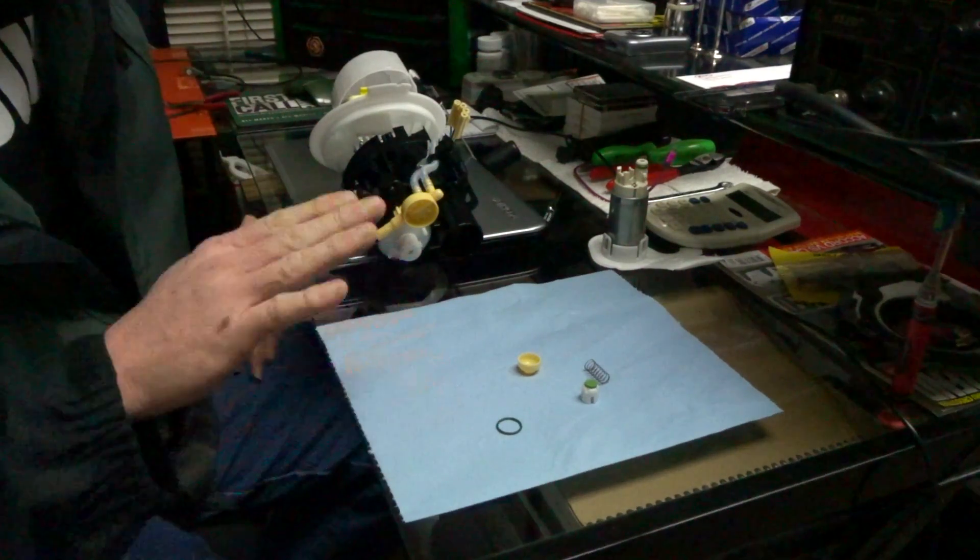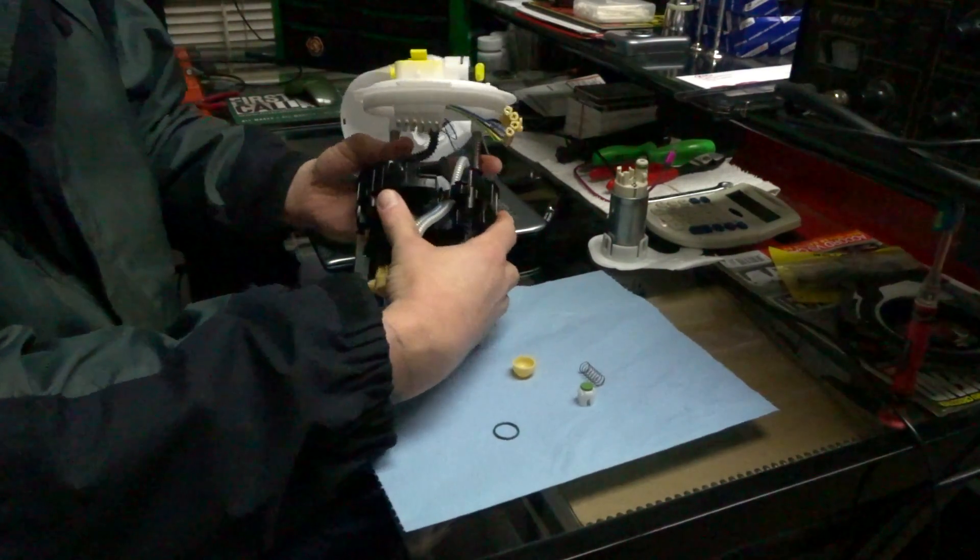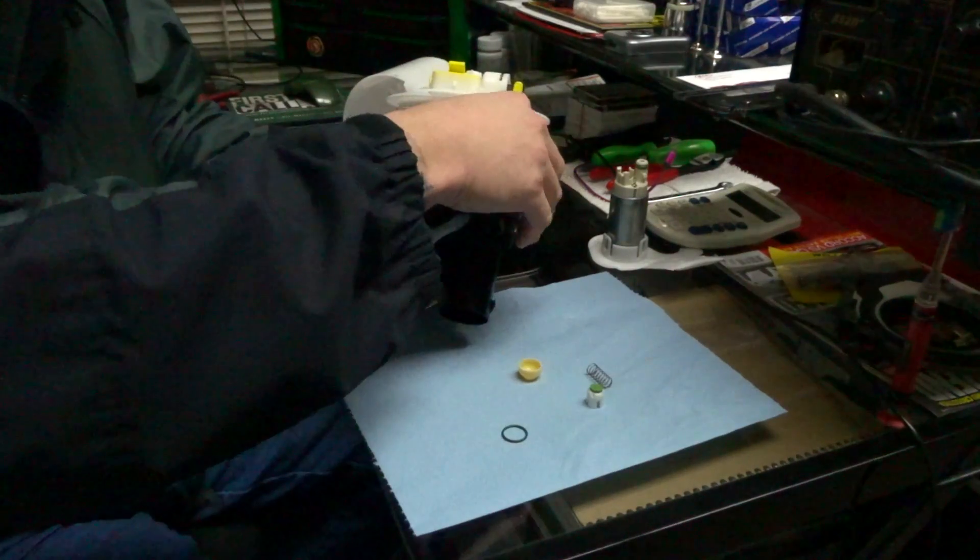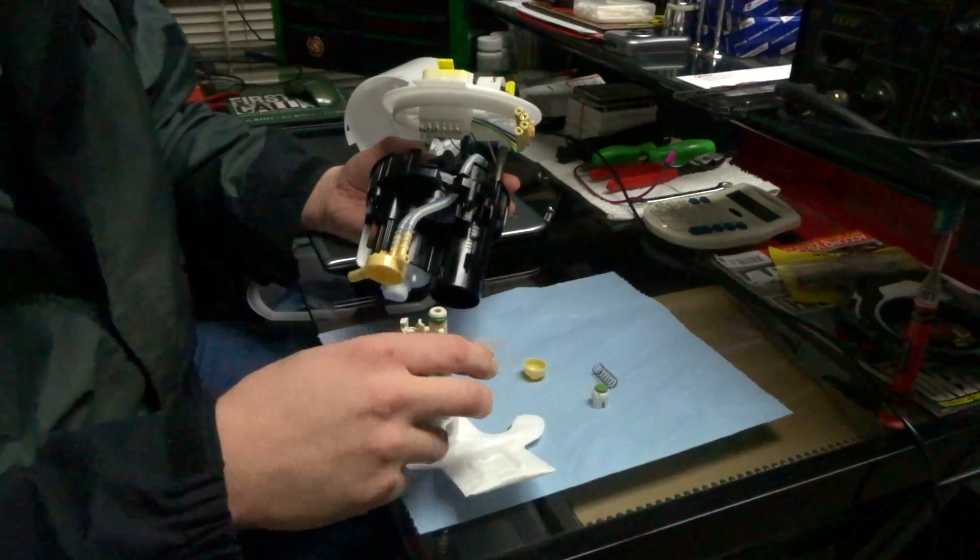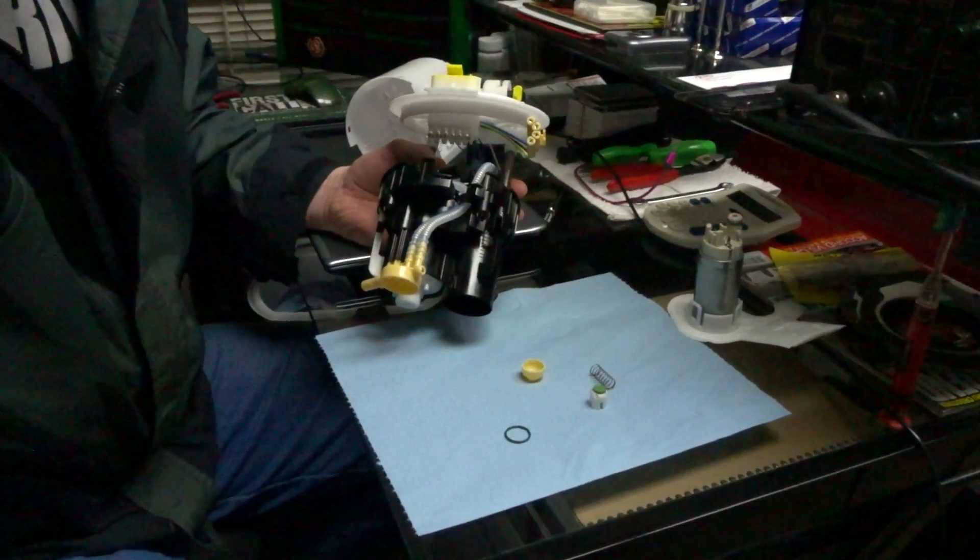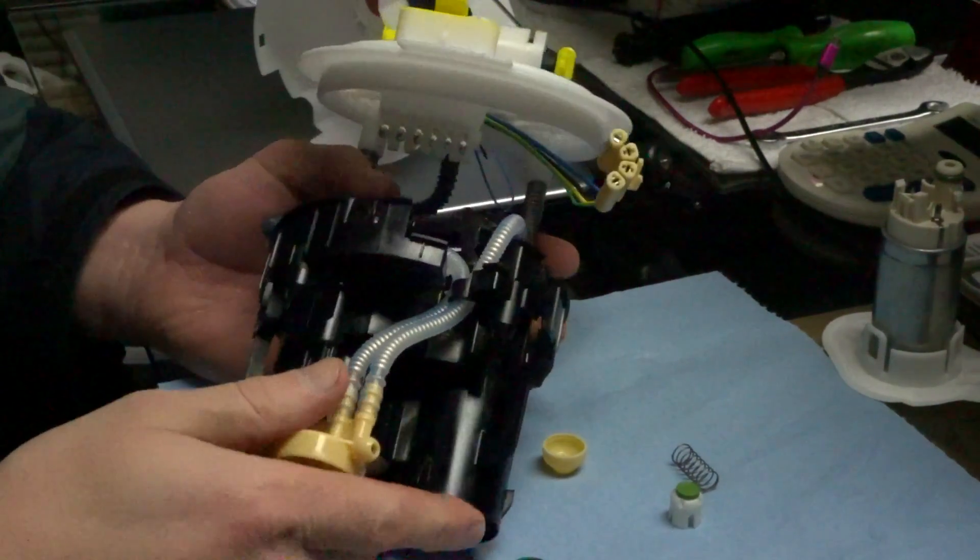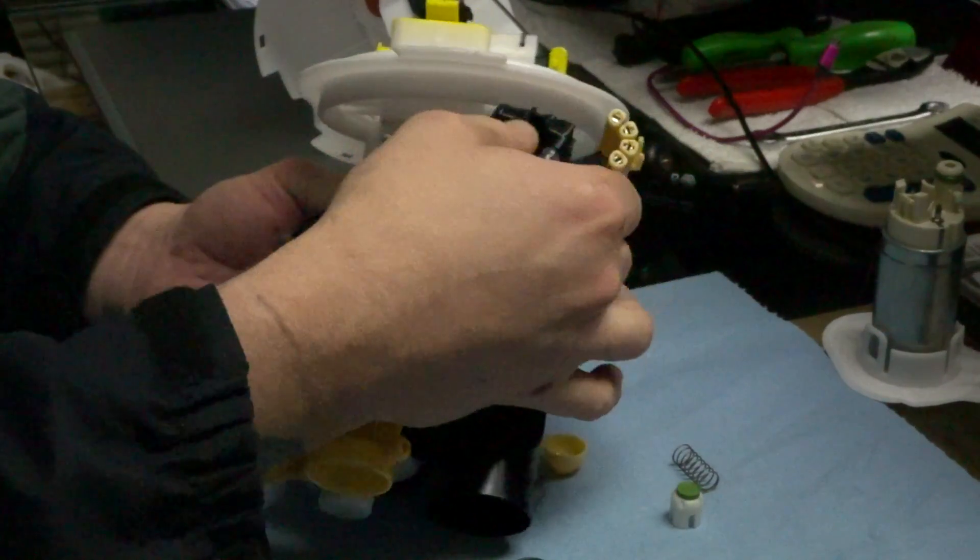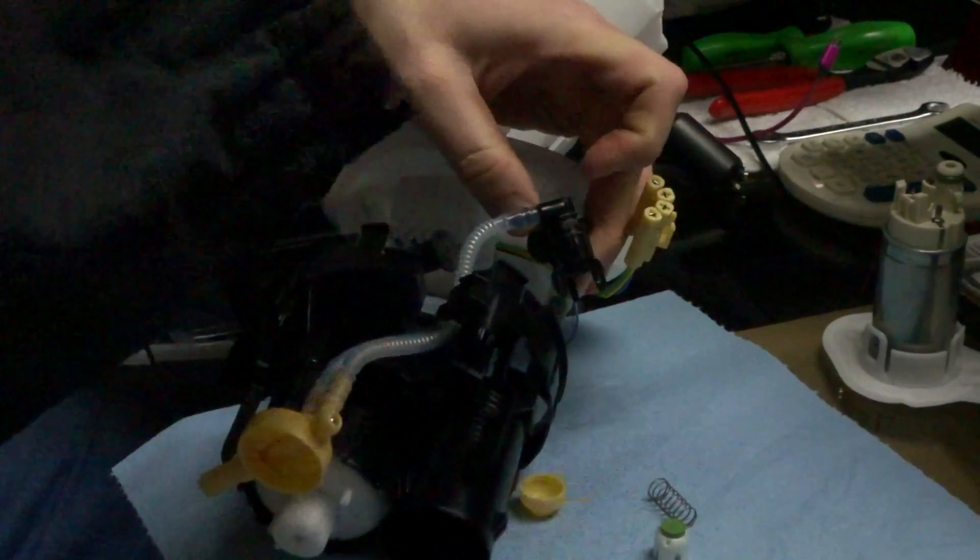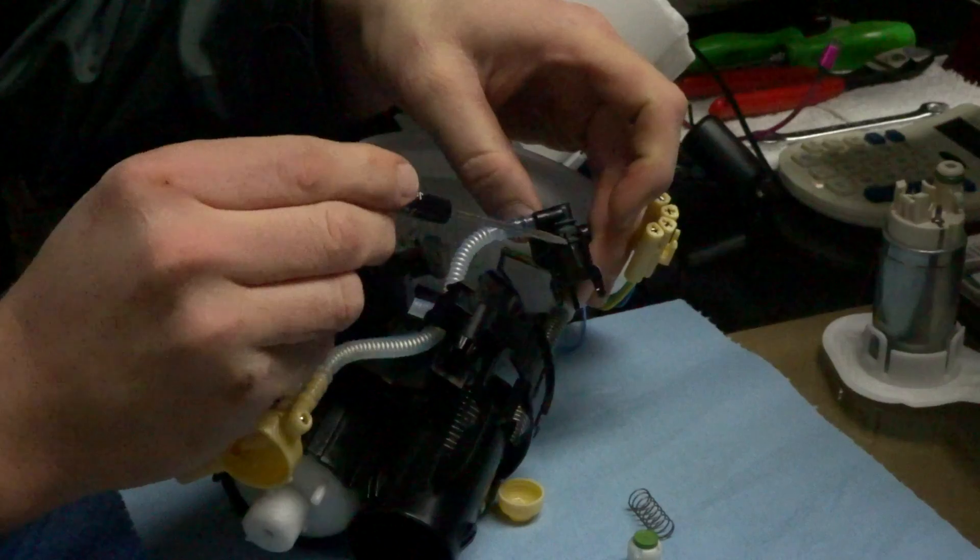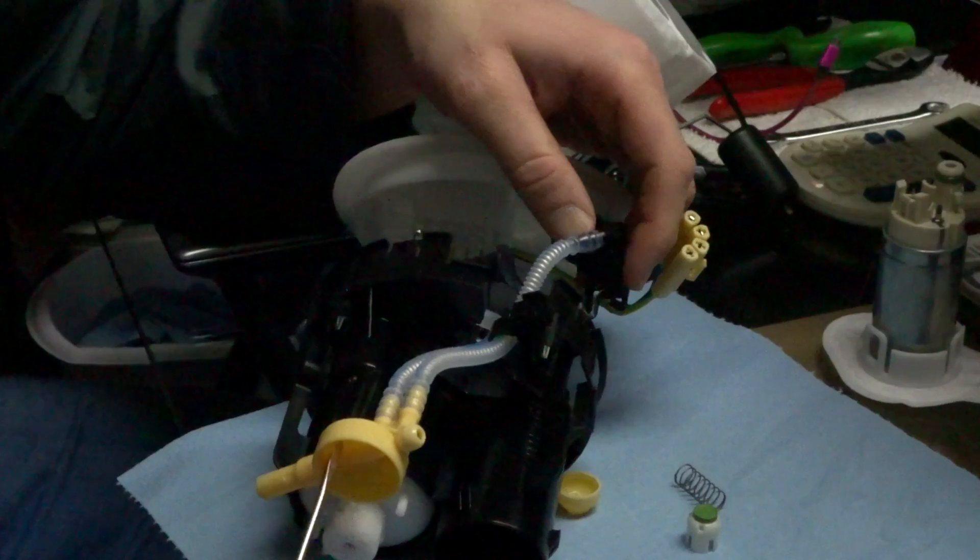So what we have here is the internal check valve inside of the fuel pump. On the last video we talked about how the fuel pump works its way up, pumps pressure up into this valve.